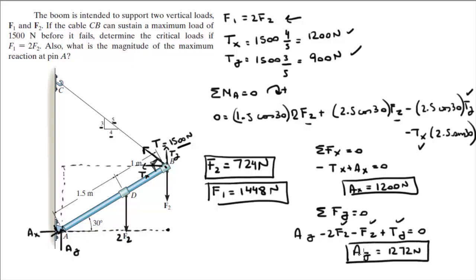But they want you to find the reaction at A. They don't tell you the X and Y components of the reaction. So to find the reaction at A, let's call it A vector, it equals simply the square root of AX squared plus AY squared. And when you plug in AX squared and AY squared and you square root both of them, you're going to get that the reaction at A equals 1.75 kilonewtons. And that is the final answer for the reaction at A, F2, and F1.